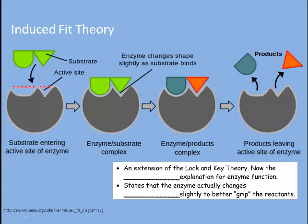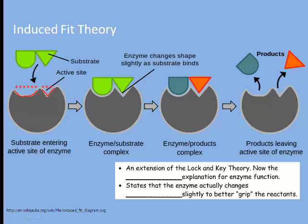It states that the enzyme active site does not have an exact perfect fit to the substrates. What happens is that the active site actually changes shape slightly to better grip the reactants, as you can see here, and as a result products can form because of the changes in bond activity.